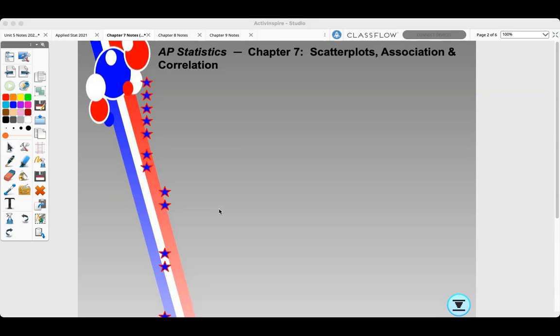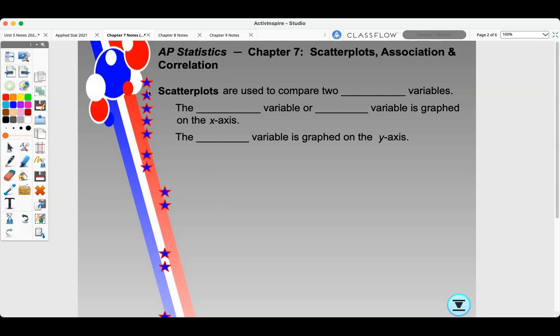Today we're going to do Chapter 7, Scatterplots, Association, and Correlation. Scatterplots are used to compare two quantitative variables. The explanatory variable or predictor variable is graphed on the x-axis. The response variable is graphed on the y-axis.